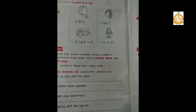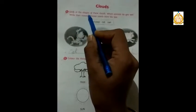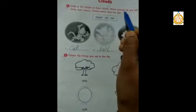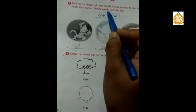Next, I will teach you page number 10. Open page number 10, the poem Clouds. First exercise: Look at the shapes of these clouds. Which animals do you see? Write their names. Choose words from the boxes.